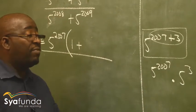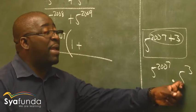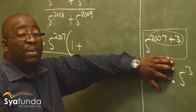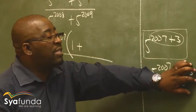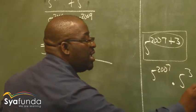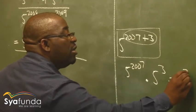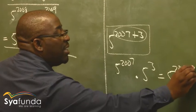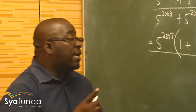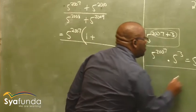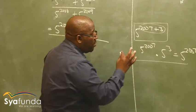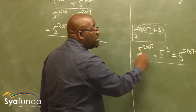Remember the exponential laws. Whenever you multiply powers with the same base — we call this the base, we call that the exponent, this whole number is called the power — all that we need to do is add the exponents. So the answer here is the same as 5 to the power of 2007 plus 3, which gives us 5 to the power of 2010. We call this an exponential law. If you multiply powers with the same base, you add the exponents.